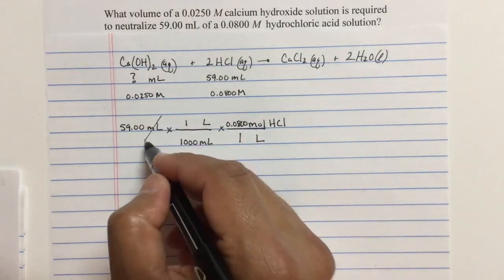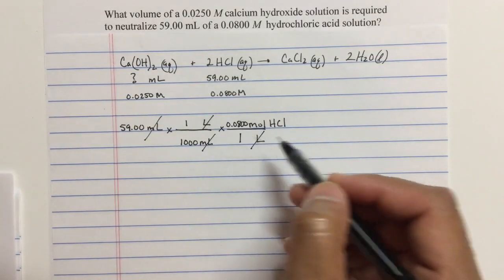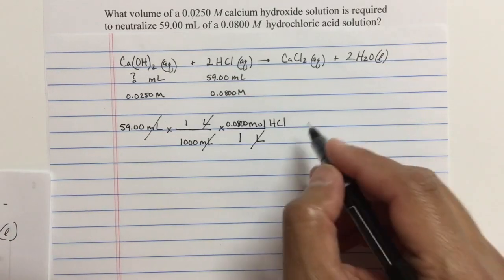If you look at the units, you'll notice that the volumes have cancelled. So now I'm in terms of moles of HCl. Now we can do stoichiometry.